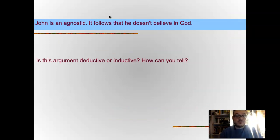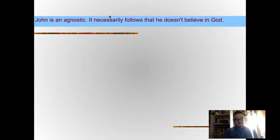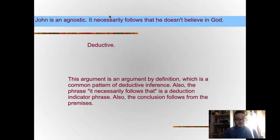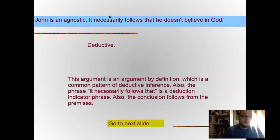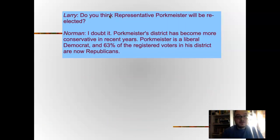'John is agnostic. It follows that he doesn't believe in God.' Is this argument inductive or deductive? It's deductive — not believing in God is part of the definition of agnostic. This is an argument by definition, a common pattern of deductive inference. Also, the phrase 'it necessarily follows that' is an indicator phrase, so it meets the indicator word test as well. The conclusion follows necessarily from the premises.